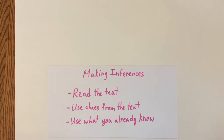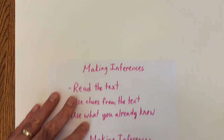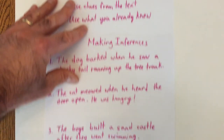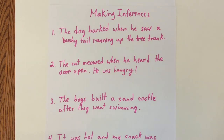So like making connections. It's kind of a confusing topic when you first are learning it, so we're going to go over some examples here to help you out. The first example is: the dog barked when he saw a bushy tail running up the tree trunk.